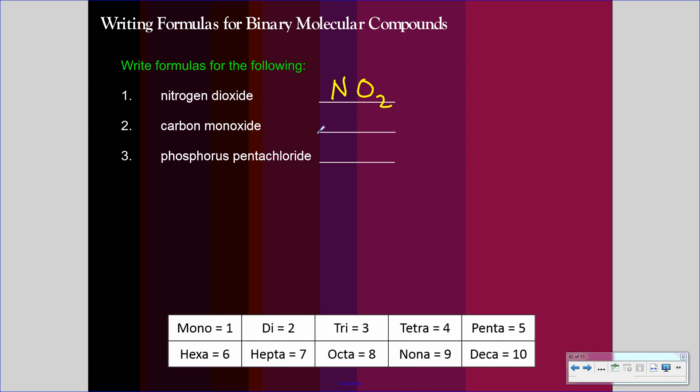Carbon monoxide. We have carbon and we have oxygen. Carbon again, one. Mono, or monoxide, one. So CO. Phosphorus pentachloride. Phosphorus is P, chlorine is Cl. Phosphorus is like mono, that's a one. Penta, five. PCl5.